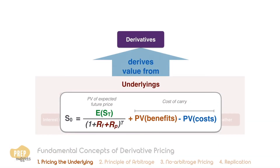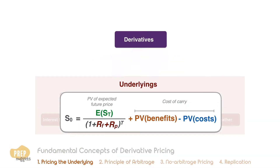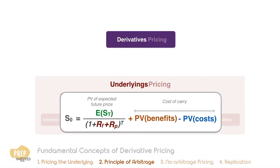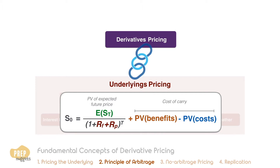Understanding how underlying assets are priced in the spot market is crucial to understanding how derivatives are priced. To understand derivative pricing, it's necessary to establish a linkage between the derivative market and the spot market. That linkage occurs through arbitrage.